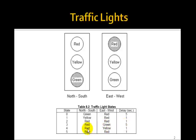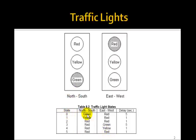Then in state S4, north-south will be red and east-west will go to yellow. Then they'll both go to red again for one second, and then we'll cycle back to state S0, back to green-red. So that's the idea.